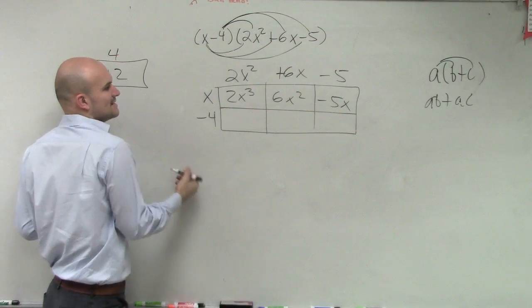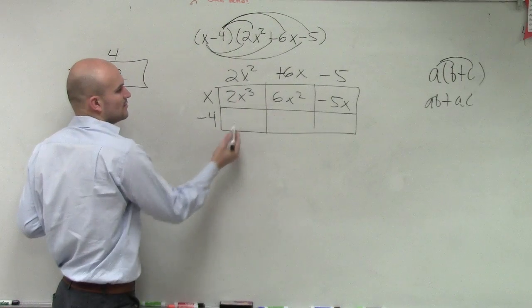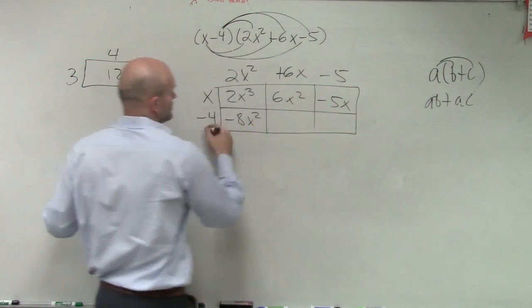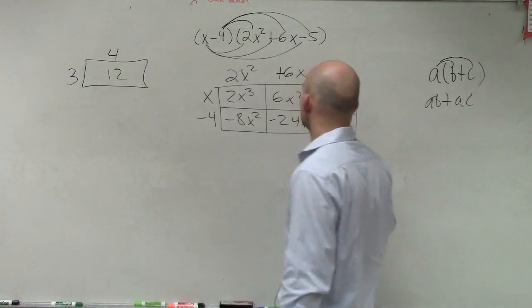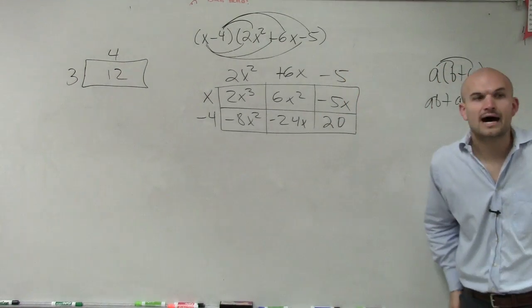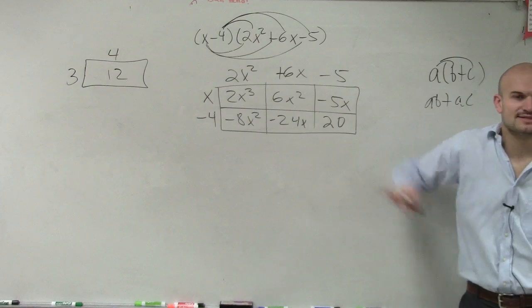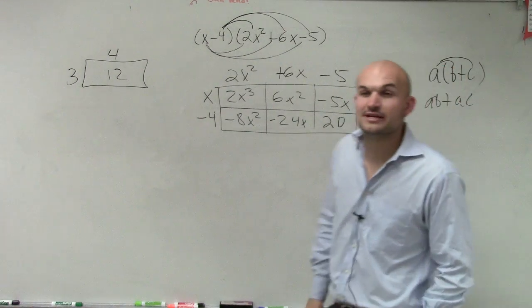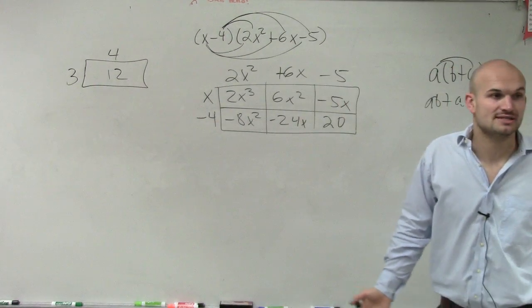2x² times negative 4, right, because now here's the height and 2x is the width. There we go. So and then there's positive 20. Okay, so now, the reason why I like this is now everything's contained in this box.